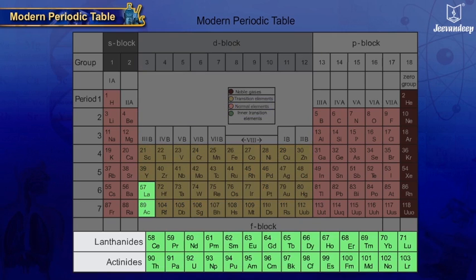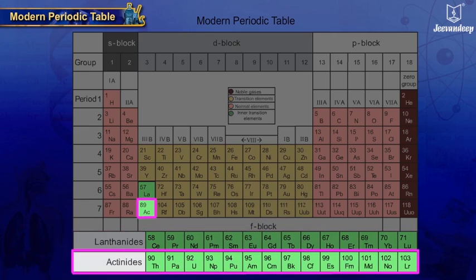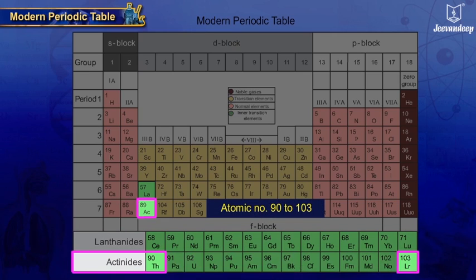Elements that are placed at the bottom of the periodic table are known as inner transition elements containing two series, i.e., lanthanides from atomic number 58 to 71 and actinides from atomic number 90 to 103.